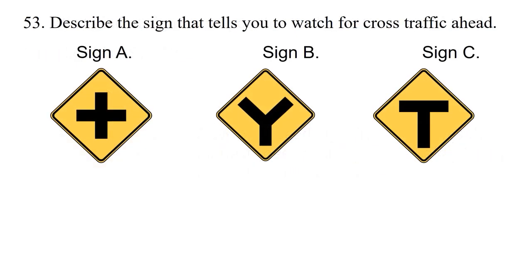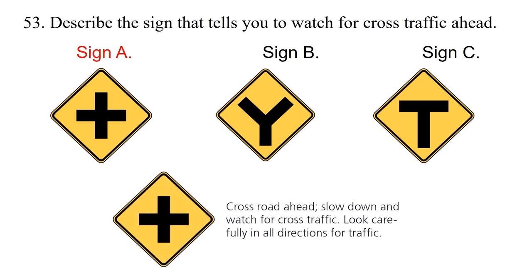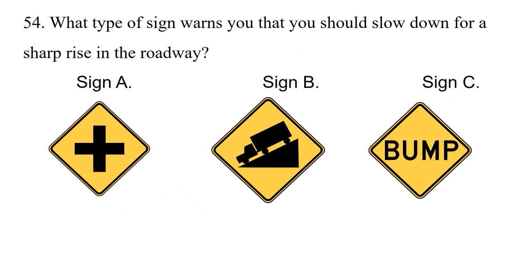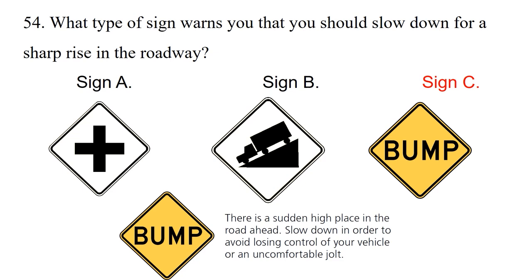Question: Describe the sign that tells you to watch for cross traffic ahead. Option 1: Sign A. Option 2: Sign B. Option 3: Sign C. The answer is option 1: Sign A. Sign C indicates there is a certain high place in the road ahead — slow down to avoid losing control of your vehicle or an uncomfortable jolt.